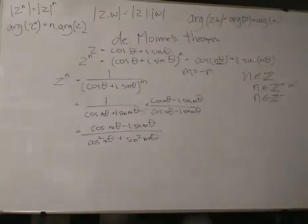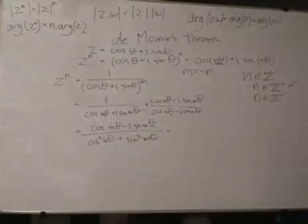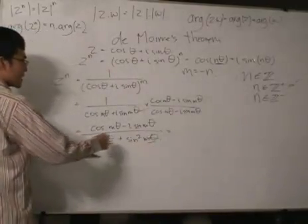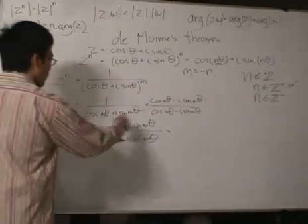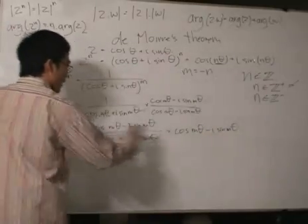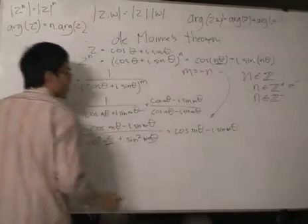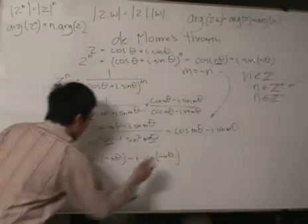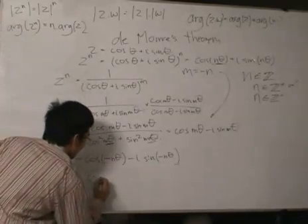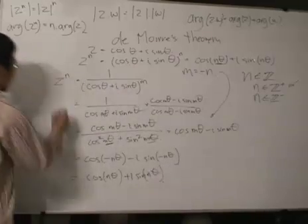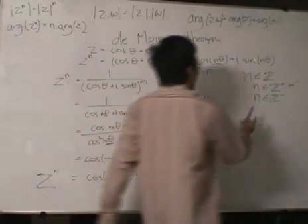Using the Pythagorean identity sine squared plus cosine squared equals one, the denominator simplifies to 1. Substituting back with m equal to negative n, this equals cosine minus n theta minus i sine minus n theta. Since cosine is an even function, cosine of minus n theta equals cosine n theta, and sine is odd so we bring out the negative, giving us cosine n theta plus i sine n theta. And there we go — this holds for n in the set of negative integers.